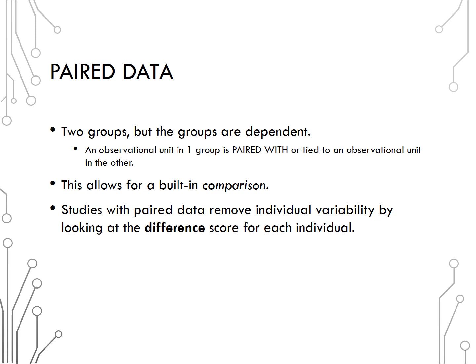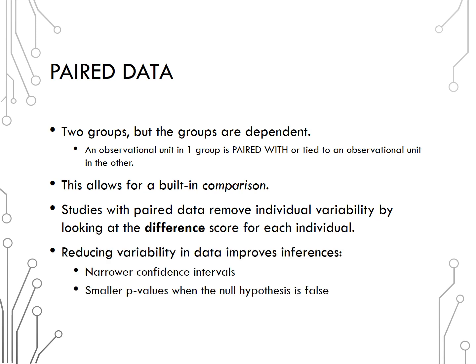We talked about that in Chapter 10, using scatter plots and regression, instead of a paired data analysis like we'll investigate in Chapter 7. Reducing that individual variability helps to improve inferences like we've always talked about. Less variability will result in narrower confidence intervals and smaller p-values when the null hypothesis is false. In other words, more power.